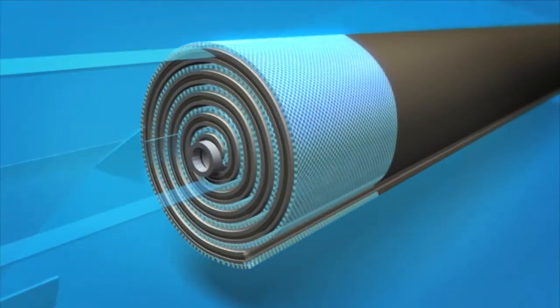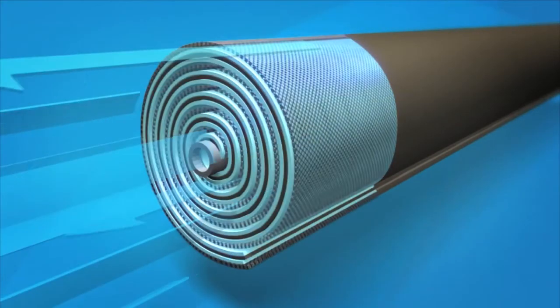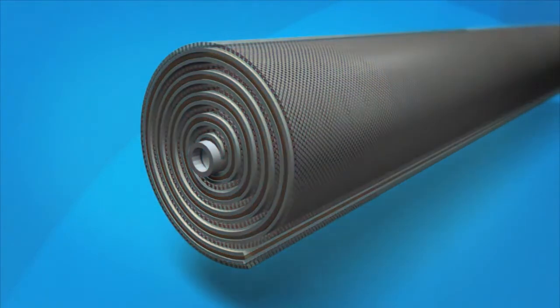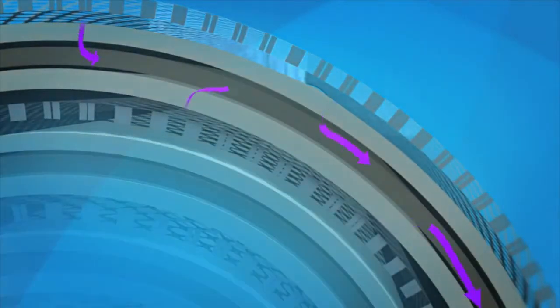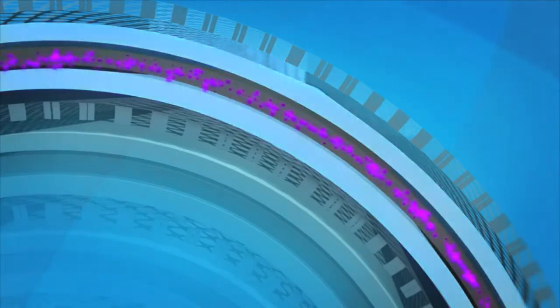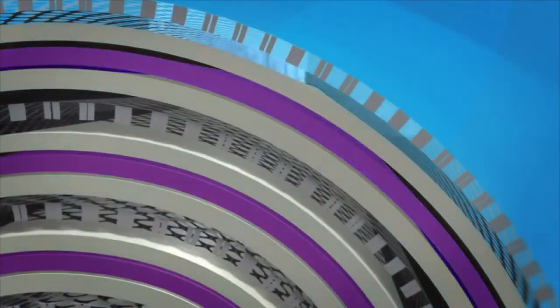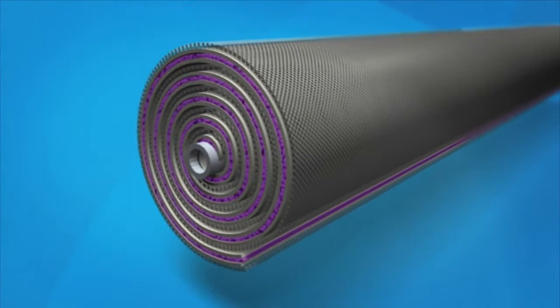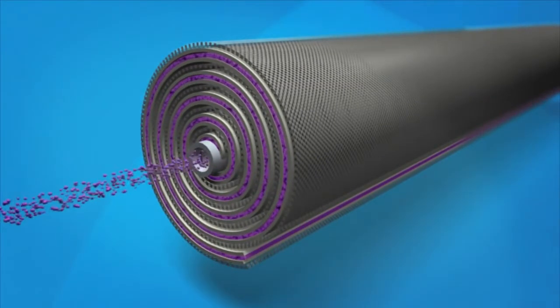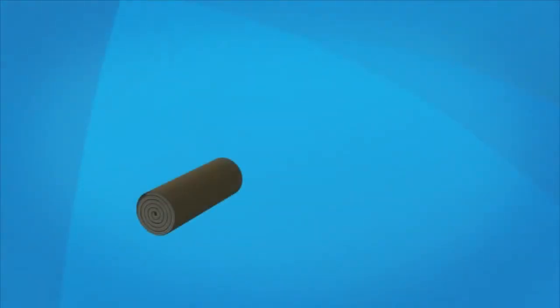Feed water is forced through the feed channel spacer and into the barrier layer of the membrane. Water passes through the membrane surface into the permeate channel. It flows in a spiral direction and collects in the core tube. This water is the final recycled water product, or permeate.